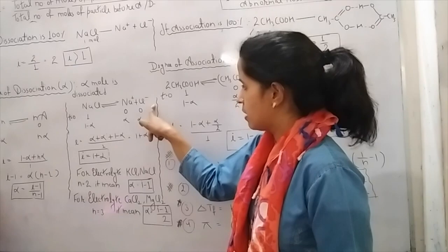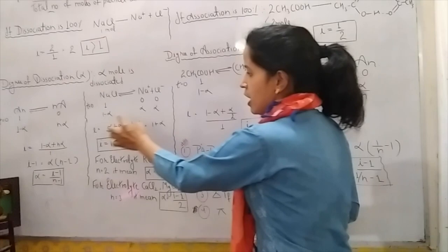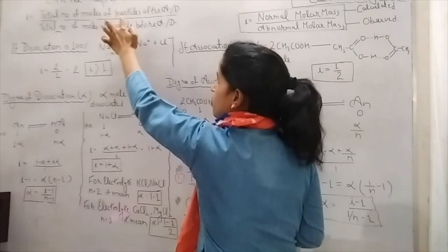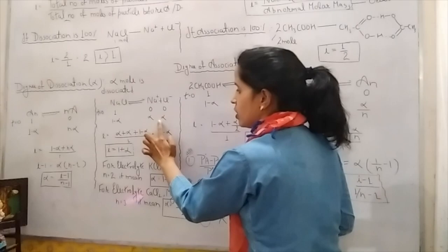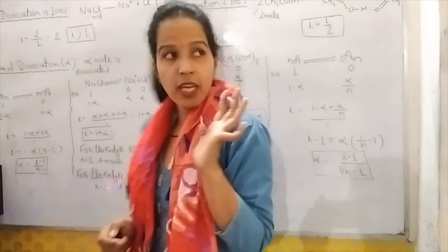When NaCl is not completely dissociated to give Na⁺ + Cl⁻: at time T=0, one mole is present and dissociation has not started — so Na⁺ and Cl⁻ are zero. When dissociation starts, alpha moles dissociate giving alpha of Na⁺ and alpha of Cl⁻. So i = (1 − α + α + α) / 1, which gives i = 1 + α.